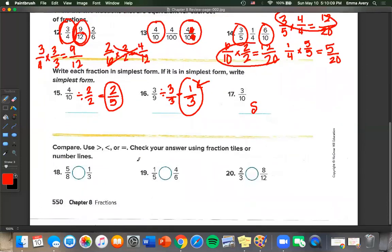On to number 18. So we're comparing, and we can check our answer with fraction tiles or number lines. So 5 eighths and 1 third. I'm going to use those benchmark fractions we were talking about. We have 1 half also equals 4 over 8. And so 4 over 8 is less than 5 eighths. And I know 1 third is less than 1 half. So 5 eighths is greater than 1 third.